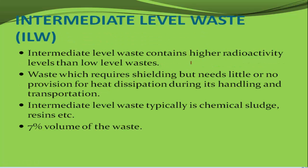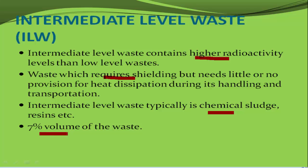Intermediate waste has higher radioactivity compared to low level waste and requires shielding, but needs little or no provision for heat dissipation. Nuclear waste can generate heat, so provisions for heat dissipation help reduce temperature. Intermediate level waste includes chemical sludge and resins, and accounts for around 7% of the total volume.